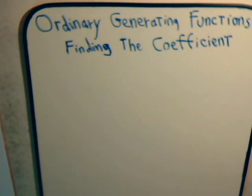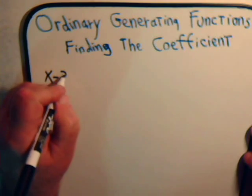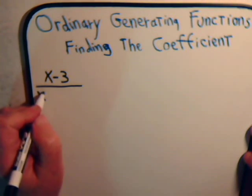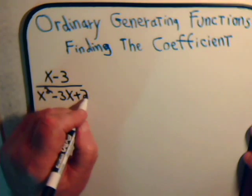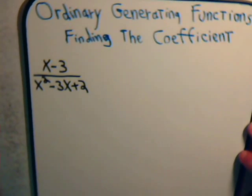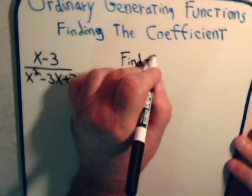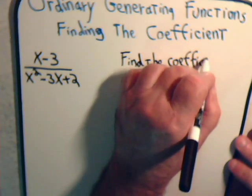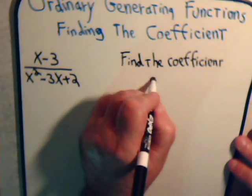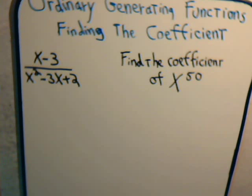So for example, suppose that after we multiplied our generating functions together, maybe we had an expression like this: x minus 3 divided by x squared minus 3x plus 2. And when we did that division, maybe we have to find the coefficient of, say, x to the 50th power. How can we do that?